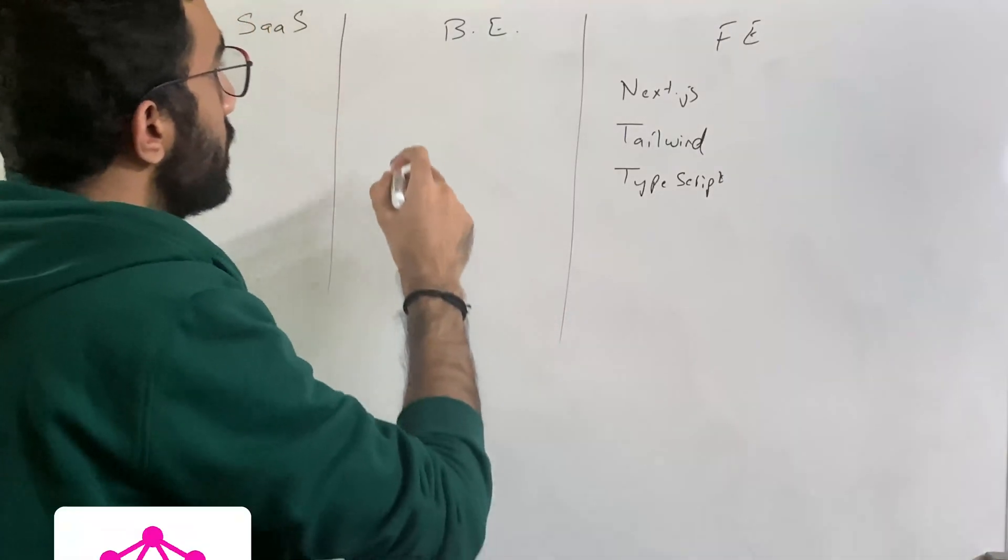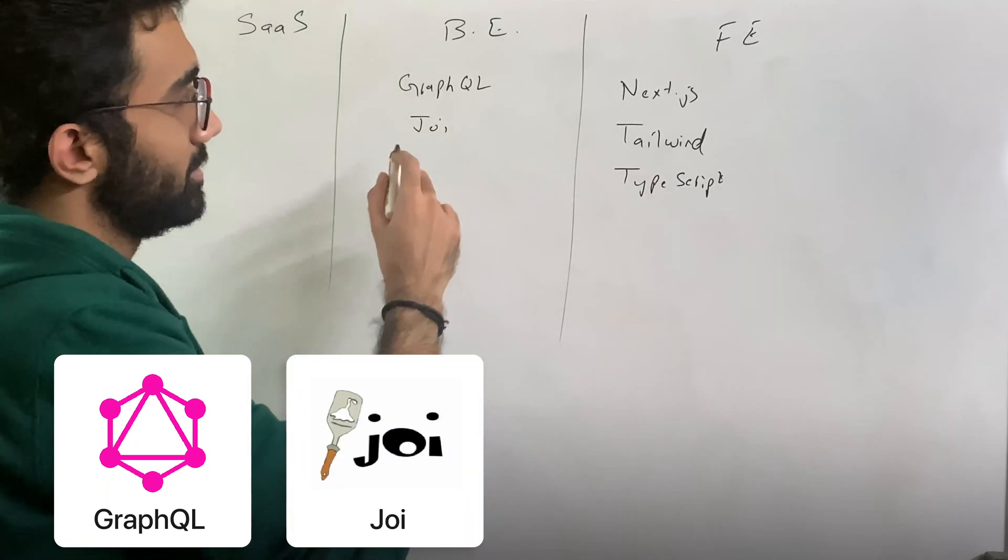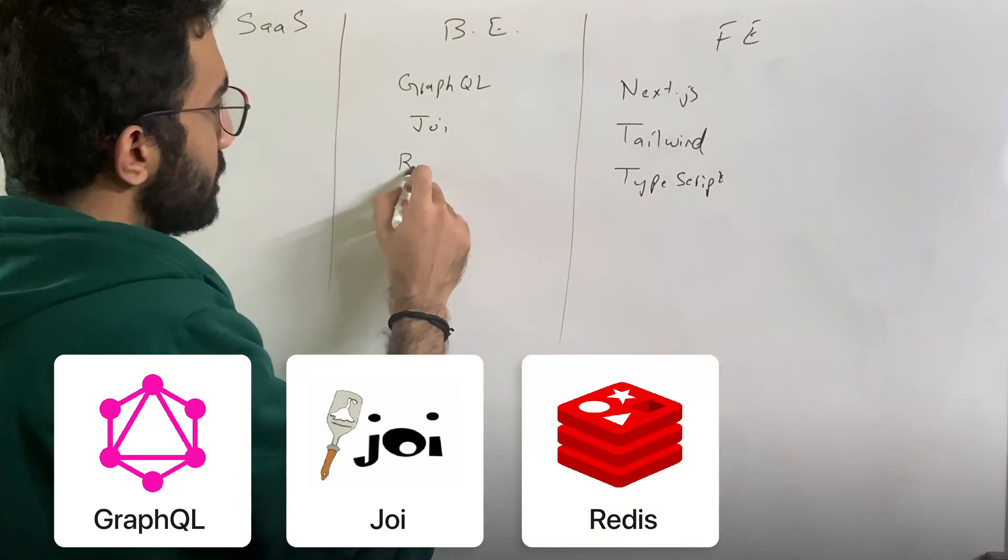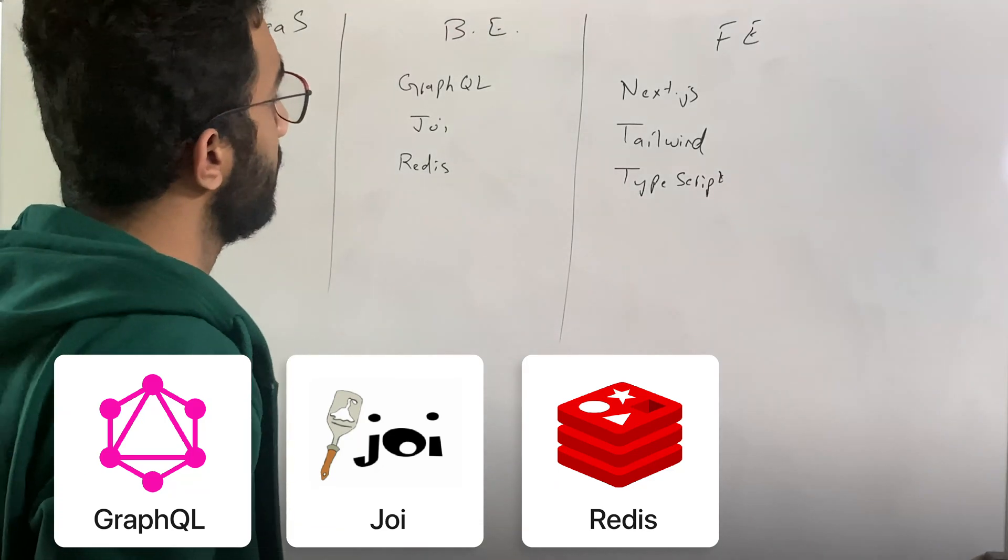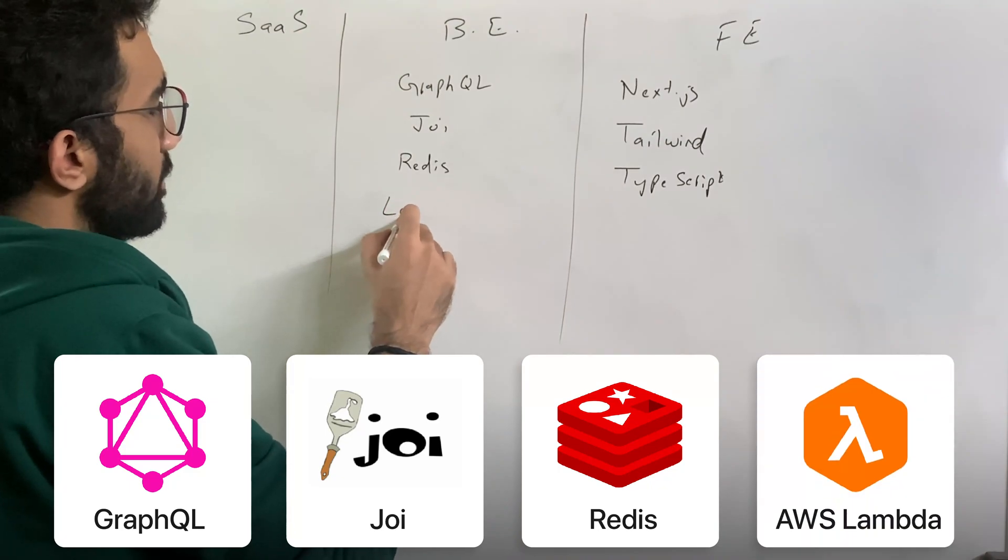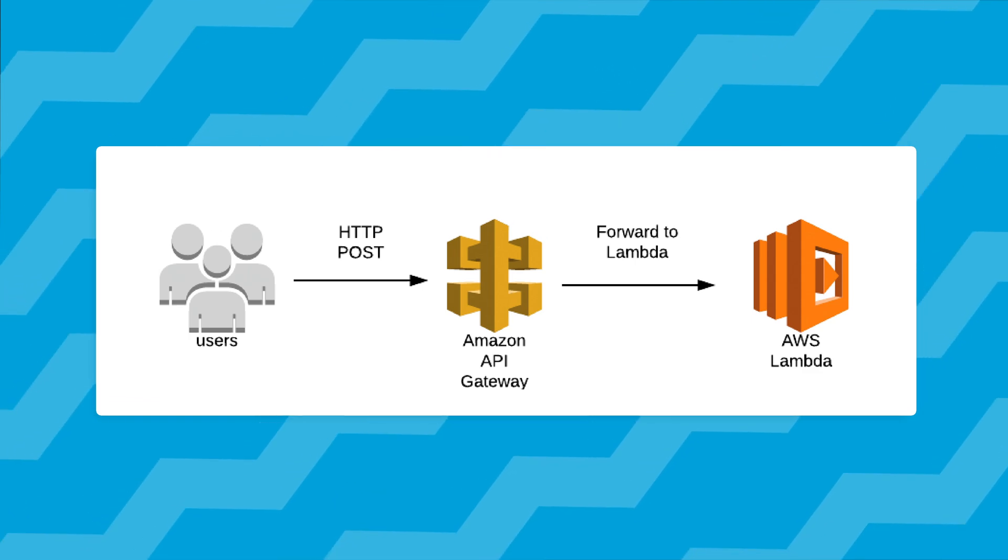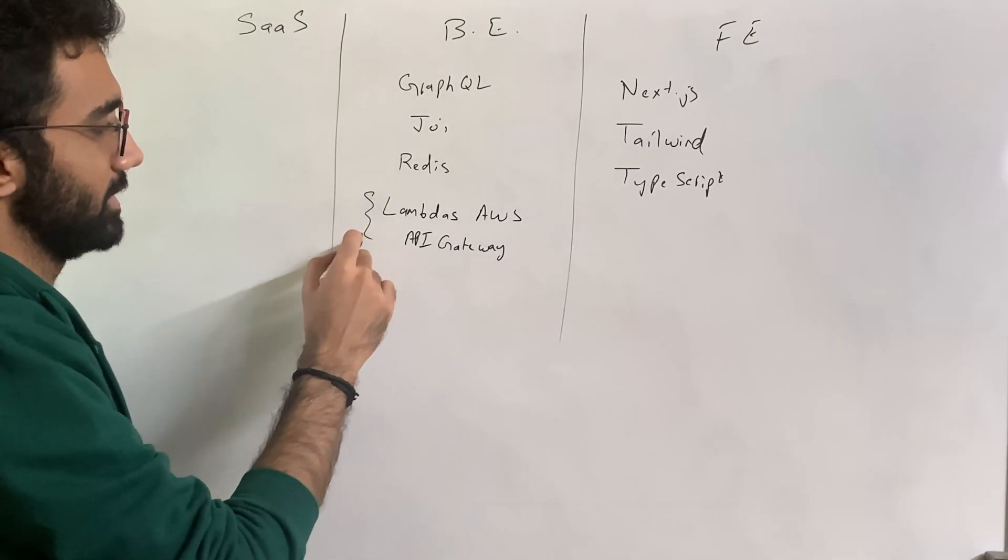On the back-end, we use GraphQL to set up the correct resolvers, mutations, and queries which automatically gives us a level of data validation. To provide even more data validation, we use Joi as the data validation library so people aren't just passing anything on the back-end. We use Redis primarily for caching database queries and rate-limiting endpoints, which is super important. To host this back-end API, we use Lambdas from AWS behind the API gateway. This provides us the ability to scale to a lot of calls, a lot of concurrent executions per second. That's the advantage of using a serverless environment.